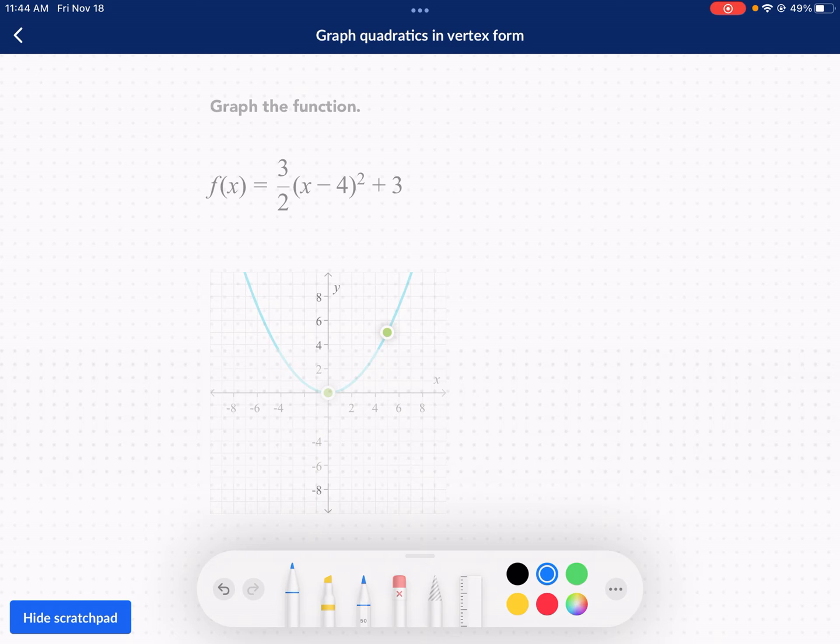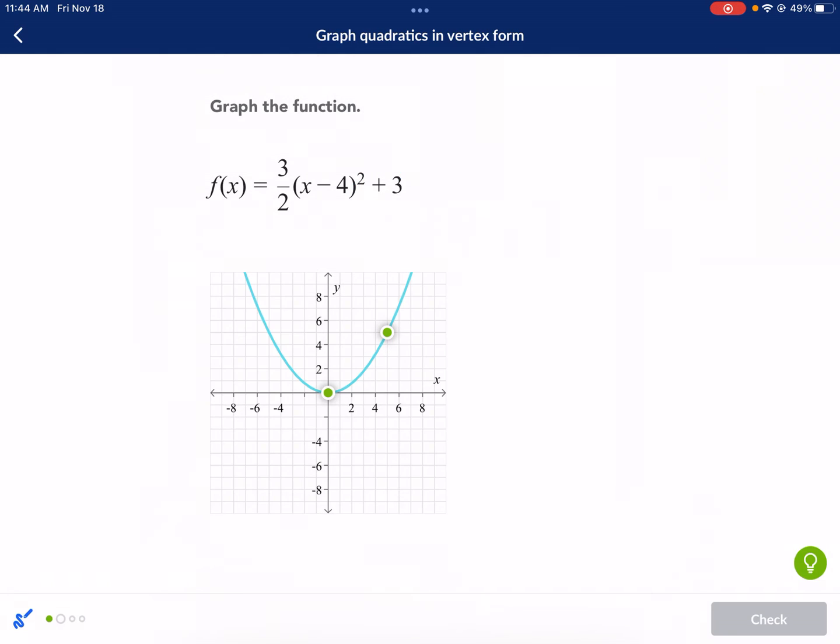So here we have x minus 4. That's, again, x minus h squared. And then we're going to add k. So our k value, we can just match that up. That's going to be our y-coordinate for the vertex. And then our x-coordinate, we need to think the opposite. So instead of minus 4, we're going to put plus 4. And we got our vertex already. It's 4, 3.